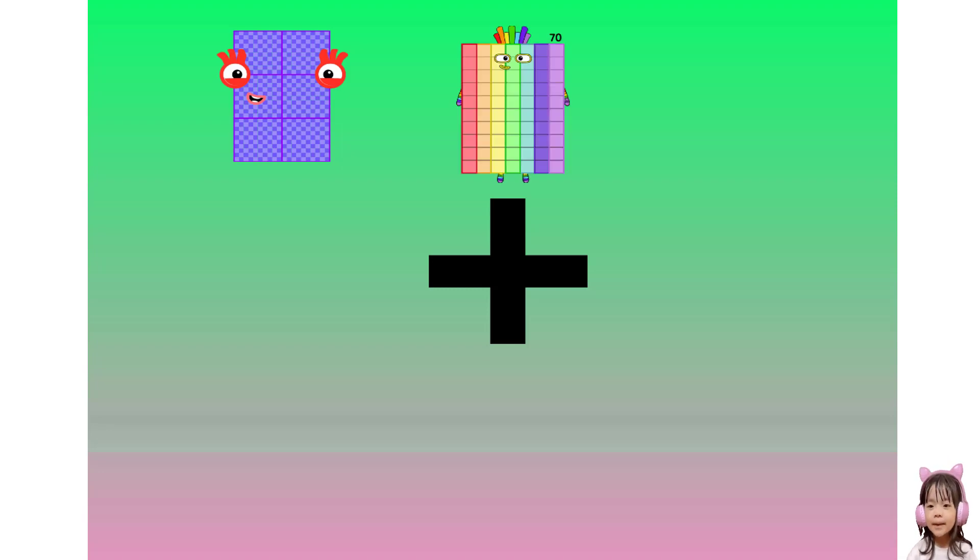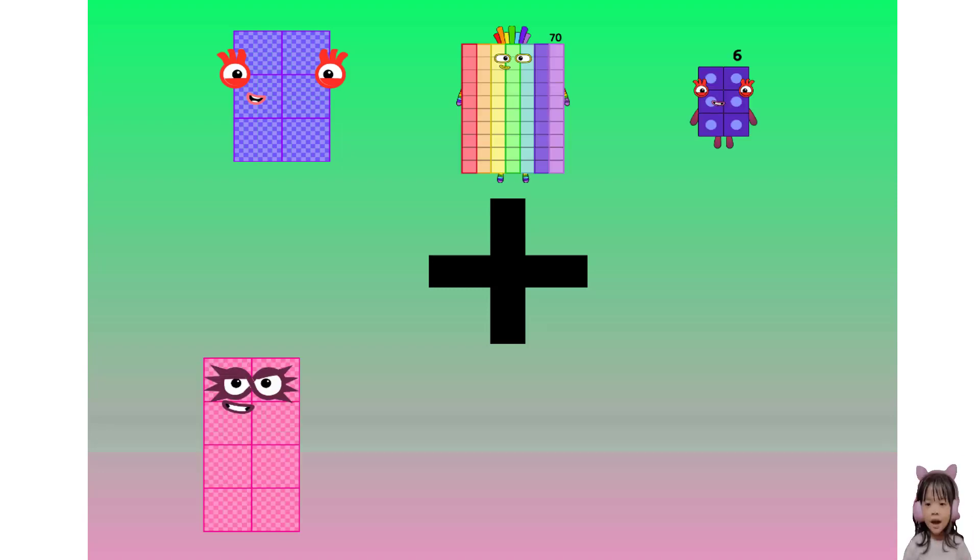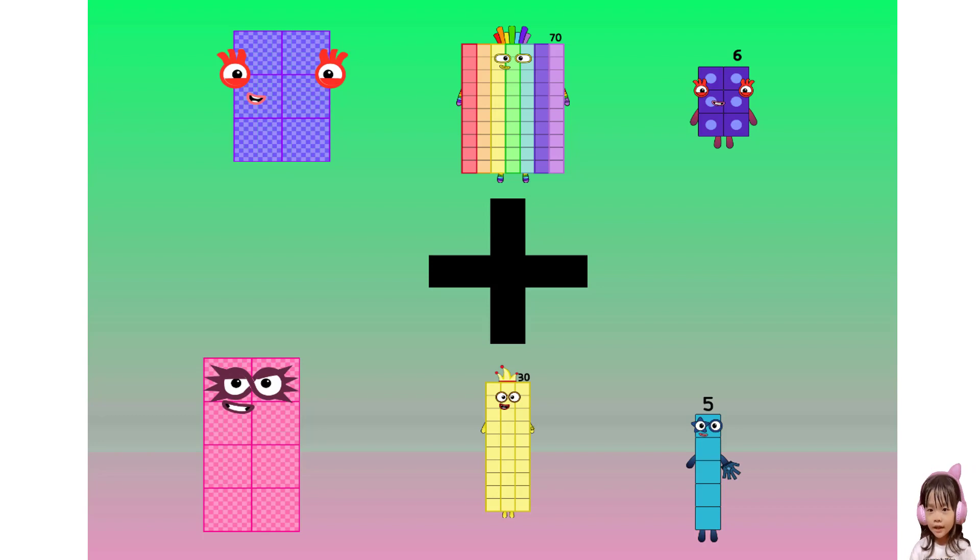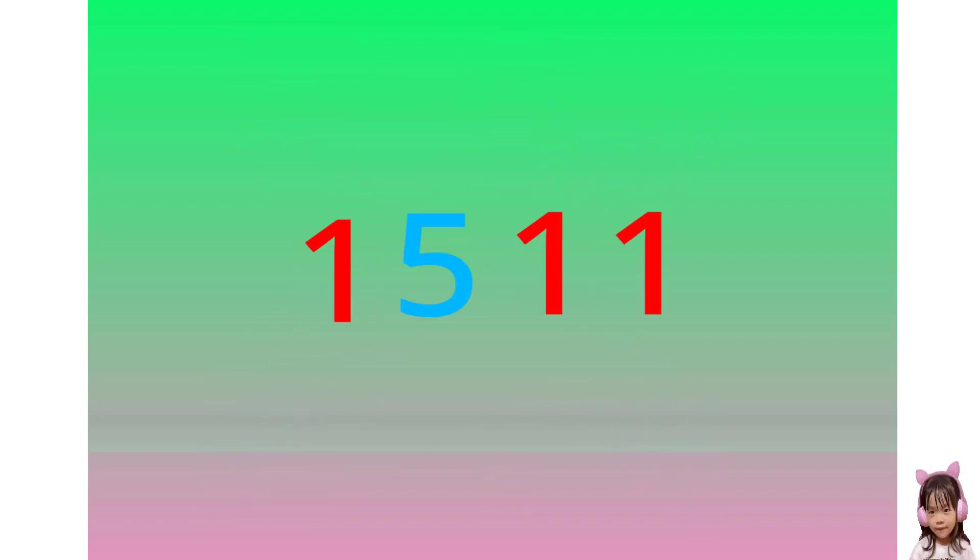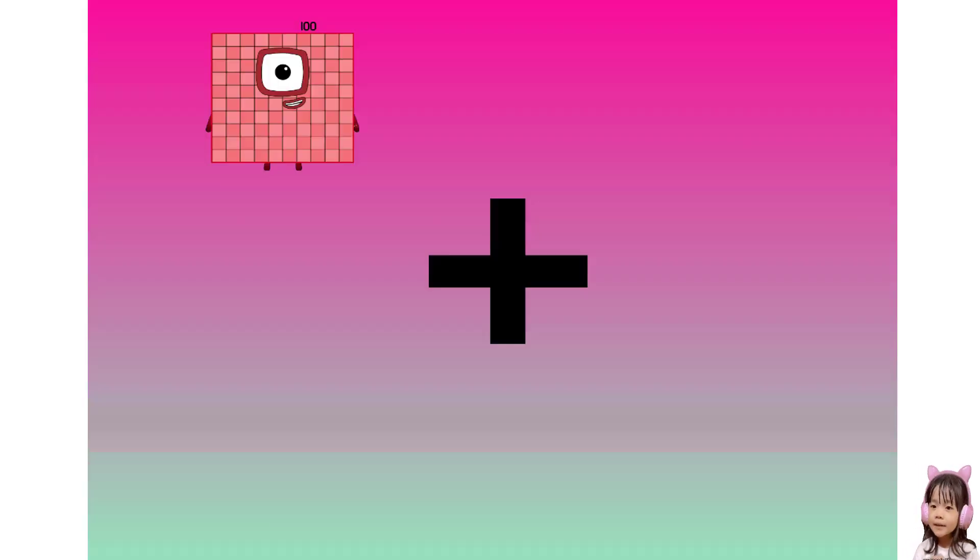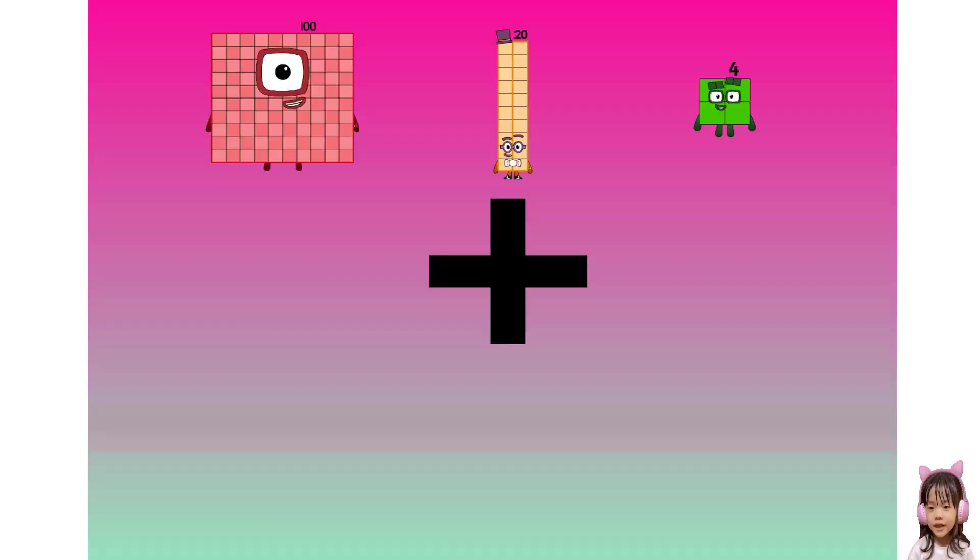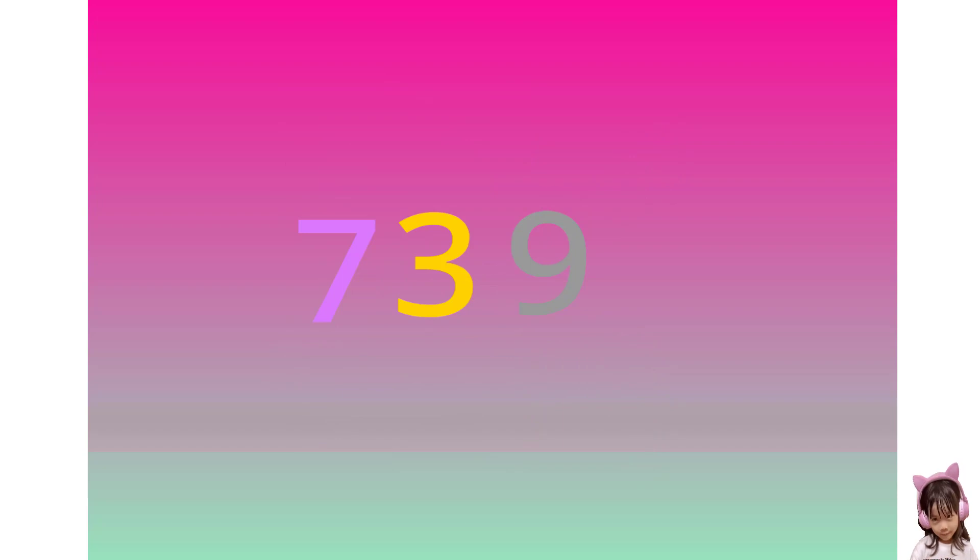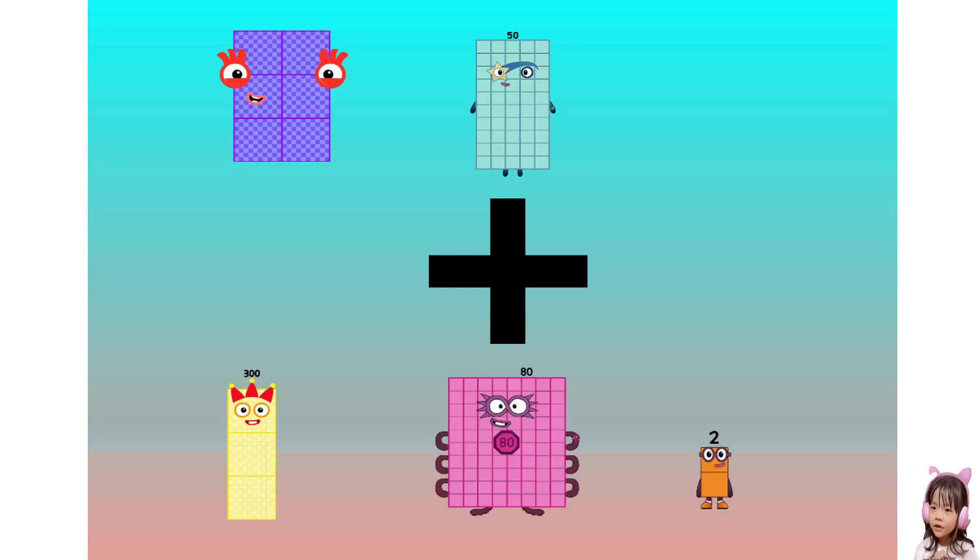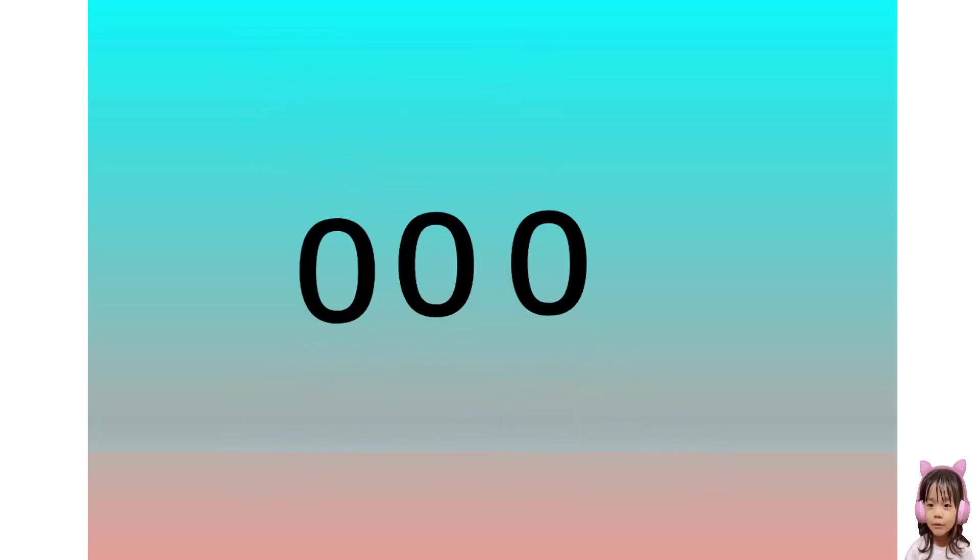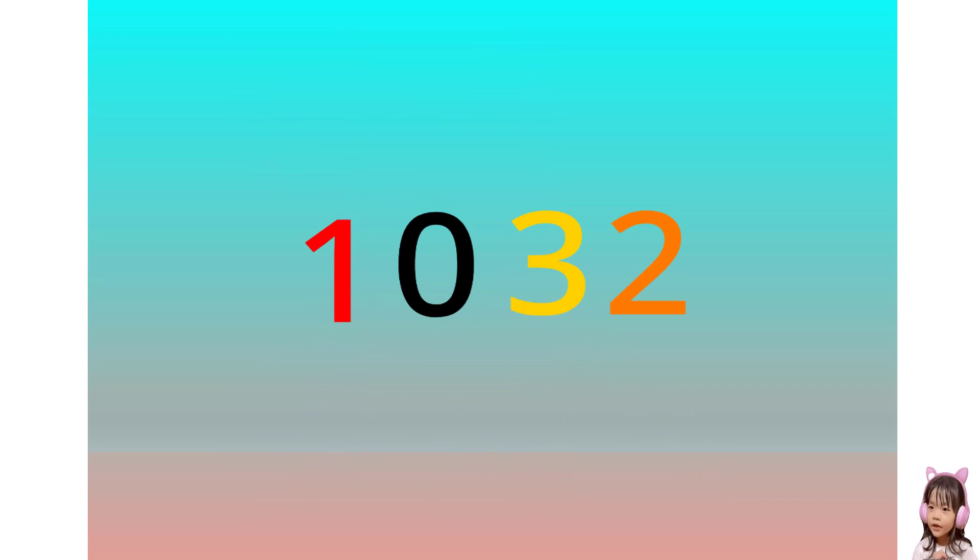676 plus 835 equals 1,511. 124 plus 615 equals 739. 650 plus 382 equals 1,032.